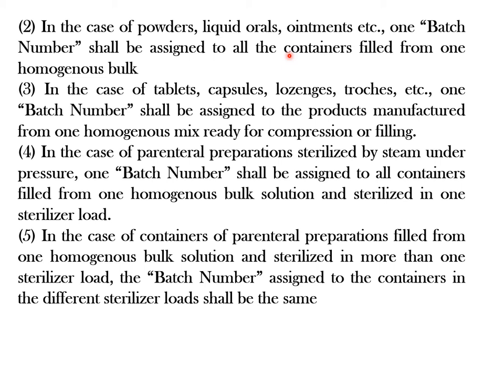In case of tablets, capsules, lozenges that are unit dosage forms, one batch number shall be assigned to the products that are manufactured from one homogeneous mixture that is ready for compression or filling. Once a bulk of granules is ready for compression or bulk powder is ready for filling into capsules, all the tablets or capsules manufactured from that bulk will have a common batch number.